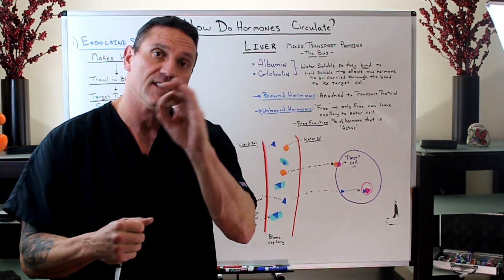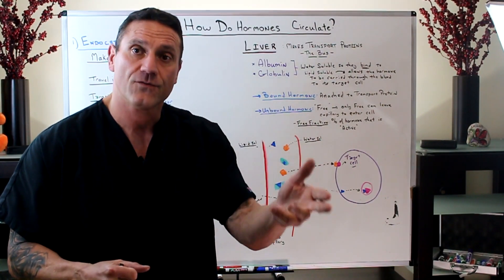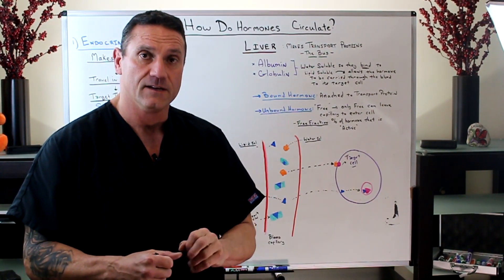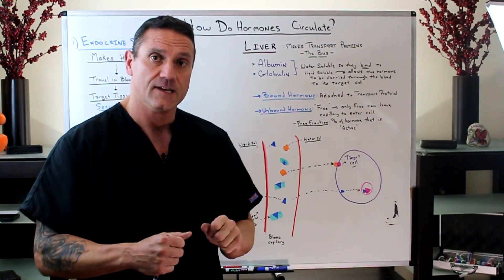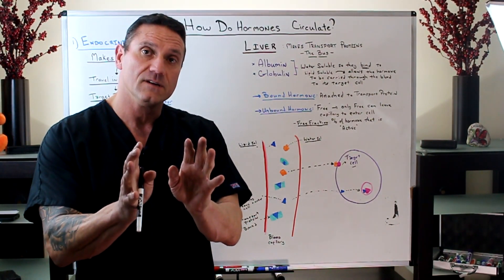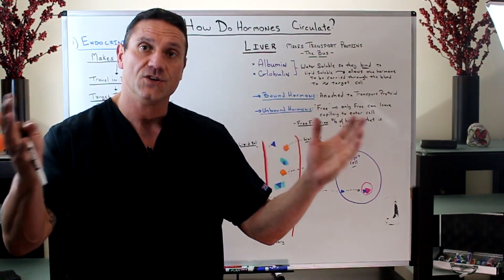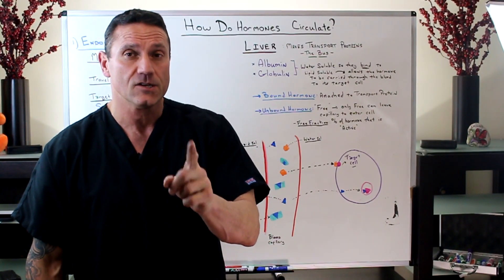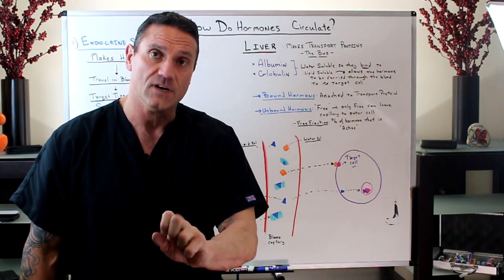So when you see thyroid hormone — T4, free T4, T3, free T3, testosterone, free testosterone — the one that's bound can't leave the bloodstream to enter the cell. So you could have a lot of hormones being produced, but really the number you're looking at is the free, because that's the one that's actually biologically active.